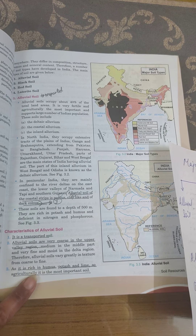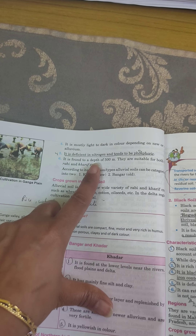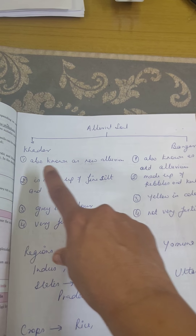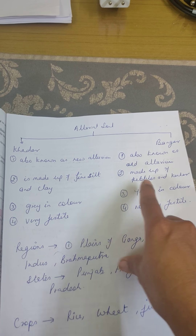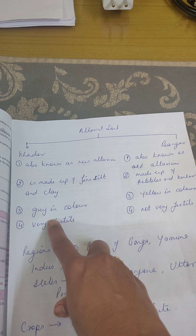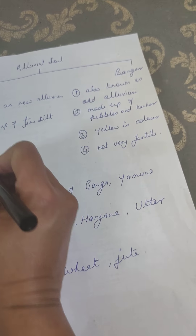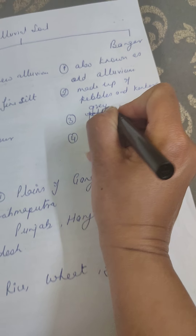Alluvial soil is rich in humus — humus is the decomposed organic matter which makes the soil very fertile and a little dark in color. It is also rich in potash and lime, but deficient in nitrogen, and tends to be phosphoric. These are very important characteristics to underline: rich in humus, potash, and lime; deficient in nitrogen; and tends to be phosphoric. The soil is agriculturally very important.